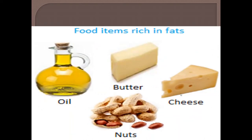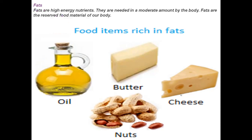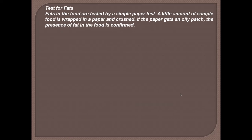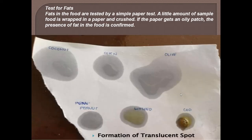The next component of food is fats. Fats are high-energy nutrients needed in a moderate amount by the body. Fats are the reserved food material of our body. Oil, ghee, butter, nuts etc. are the sources of fats. Fats in food are tested by a simple paper test — a little amount of sample food is wrapped in a paper and crushed. If the paper gets an oily patch, as you can observe in this image, the presence of fat in the food is confirmed.